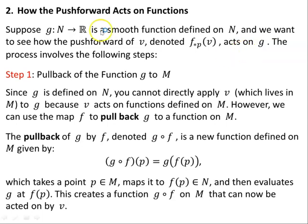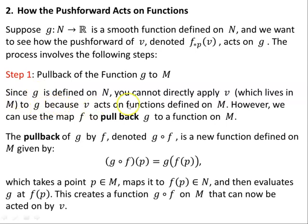Now let's focus on how the push forward acts on functions. Suppose G is a smooth function — a map from N to the reals — defined on N, with no sudden changes of gradient or discontinuities. We want to see how the push forward F★_P(V) acts on G. Since G is defined on N, you cannot directly apply V, which lives in the tangent space to M, to G. However, we can use the map F to pull back G to a function on M.